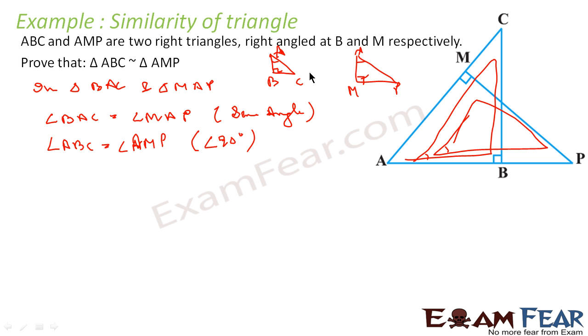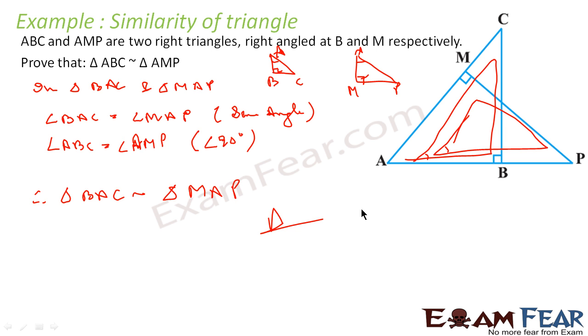Since two angles are equal, we can say that triangle ABC is similar to triangle AMP.